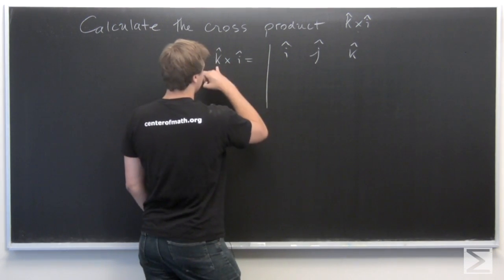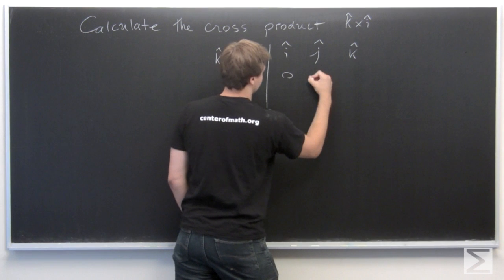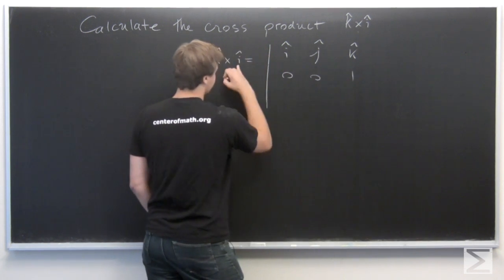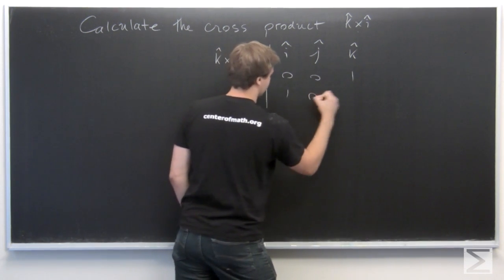So, then we write the first vector, which will be 0, 0, 1. And the next one will be 1, 0, 0.